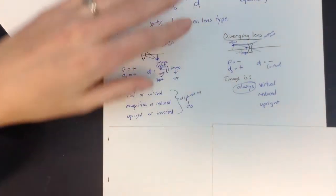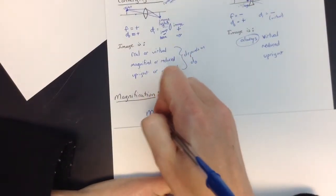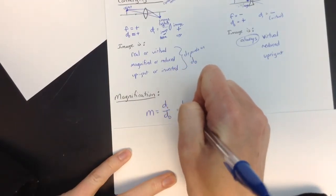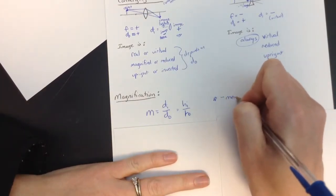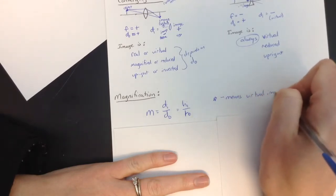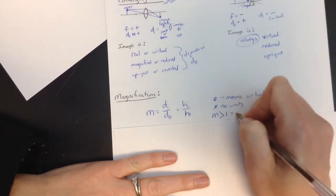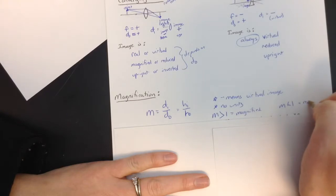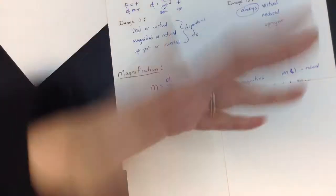That equation is going to work just like the other ones. We also talk about magnification here, and this works just like in the mirrors. It's di-do or hi-ho. That's how I remember that one, hi-ho, di-do. If you end up with a negative value in here, that really just means that it's a virtual image. And there aren't any units to this. If it's greater than 1, that means that it's magnified. And if it's less than 1, that means it's reduced because it's a multiplier.